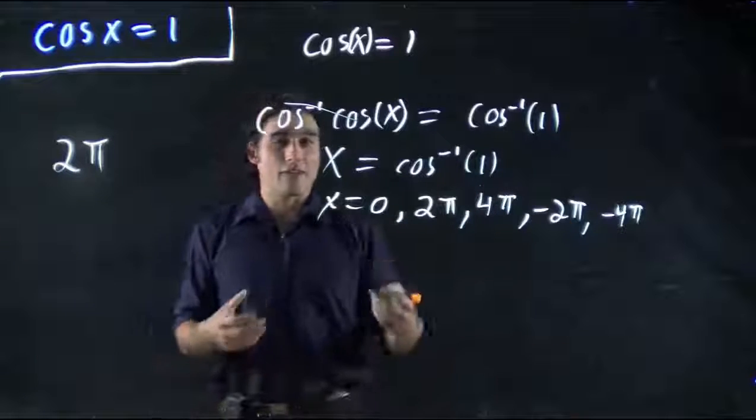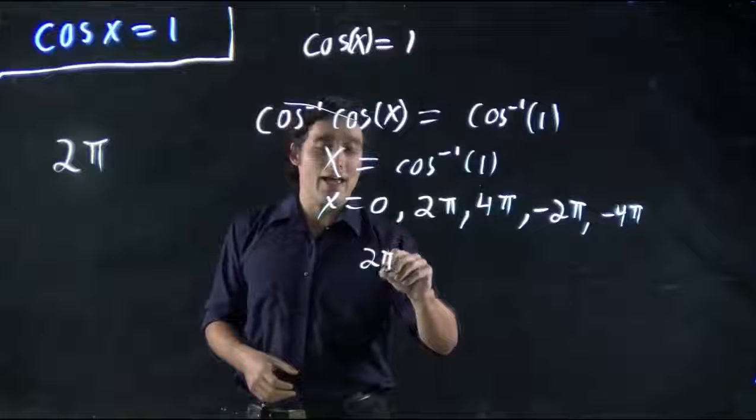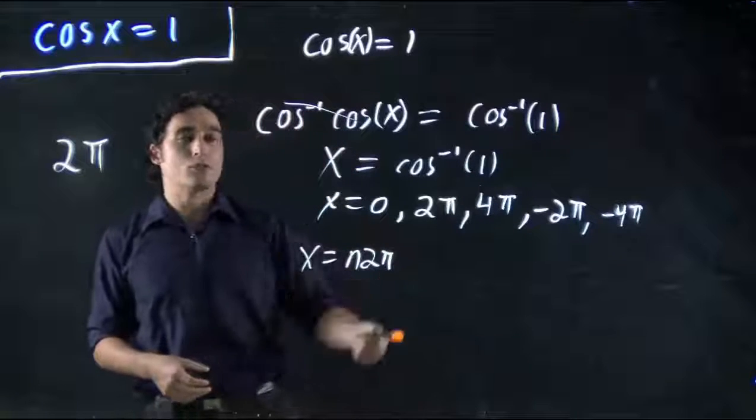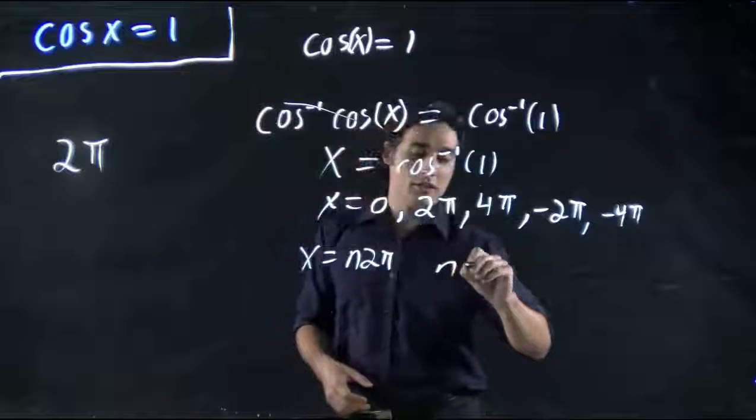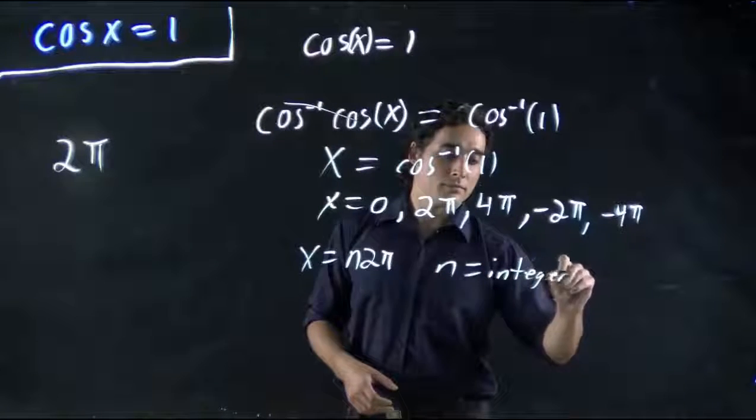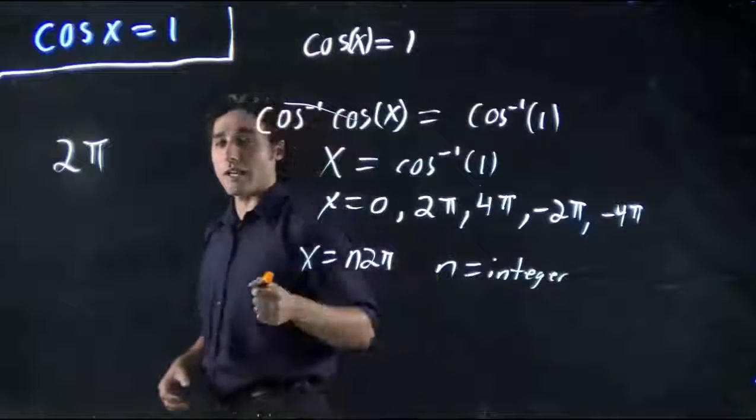So, we can think it's every 2 pi, well, some n times 2 pi. X will be equal to n times 2 pi, where n is an integer, which is a fancy way of saying a whole number.